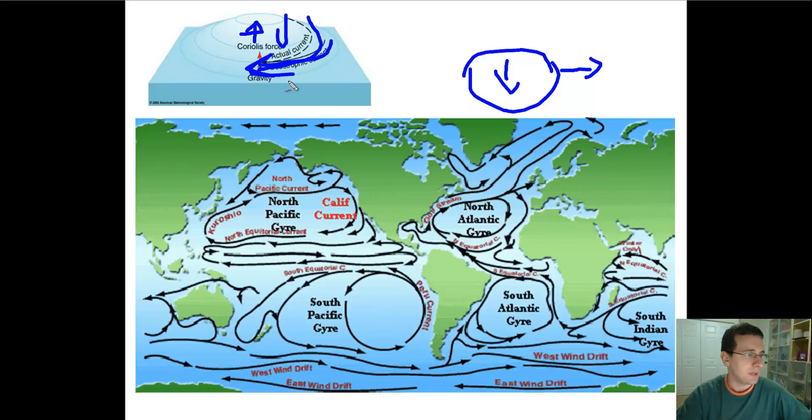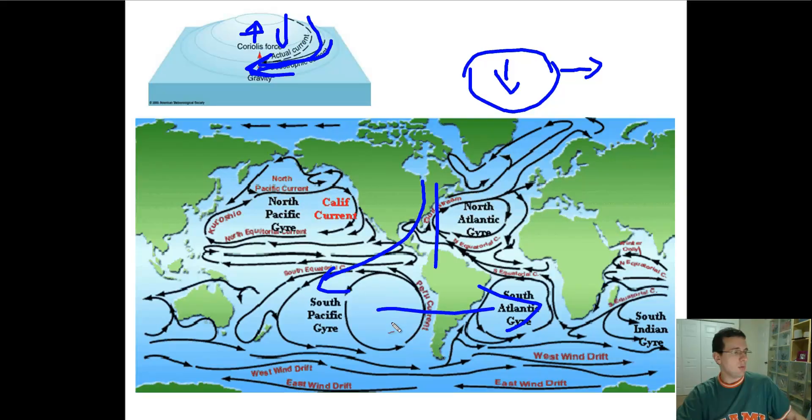Basically what happens mimics what happens when you travel from an airplane and the Earth is spinning. Because the Earth is spinning, you cannot accidentally land in the same place you got. If you try to go in a straight line, you will end up doing something like this because the Earth is moving in that direction at the same time that you're trying to move in that direction, so that's why you end up getting that effect.